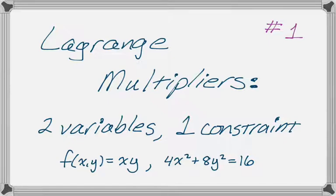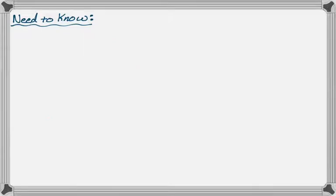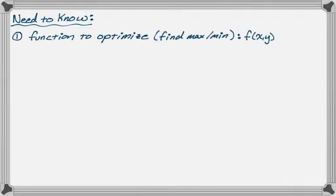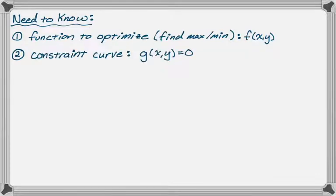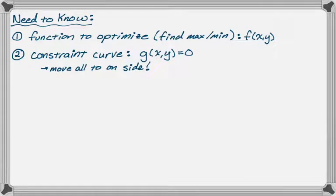So let's see what we need to know to be able to do this. The first thing you need is a function that you want to optimize — in this case, f(x,y). We also need a constraint curve, which is g(x,y) set equal to zero. That just means move everything to one side, call it g(x,y), and set it equal to zero.